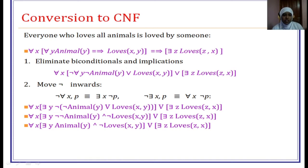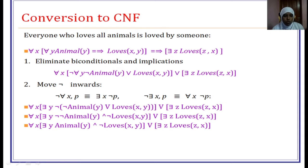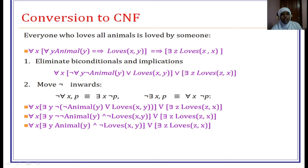Second rule: move the negation inwards. For-all becomes there-exists, there-exists becomes for-all. A positive literal becomes negated; a negated literal becomes positive. Applying this: for-all Y becomes there-exists Y, negation of animal(Y) becomes animal(Y), OR becomes AND, and loves(X, Y) becomes negation of loves(X, Y). Then there-exists Z: loves(Z, X) remains as negation of loves(Z, X). Applying the third rule: no need for standardization as variables X, Y, Z already represent distinct components.